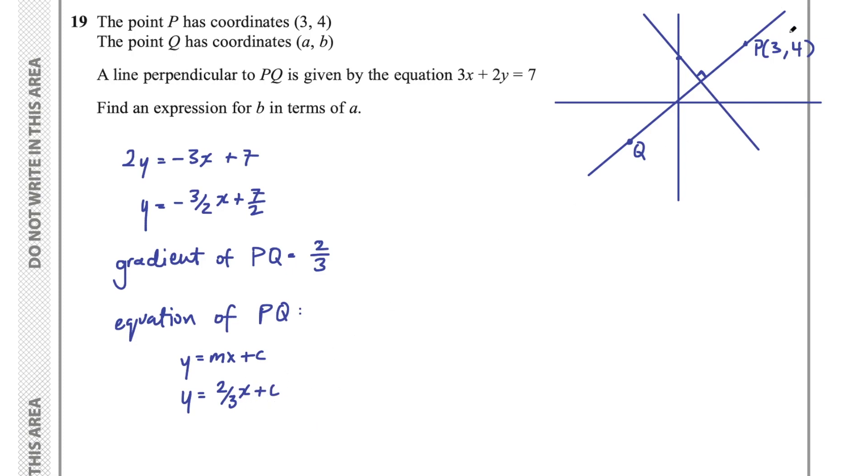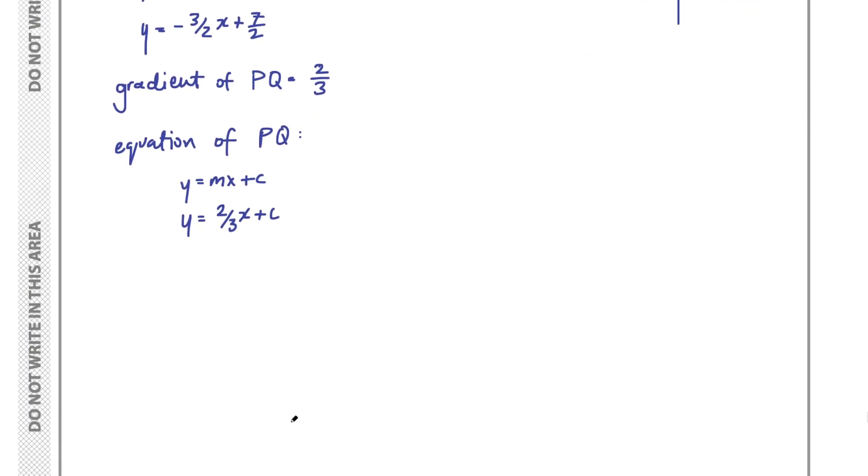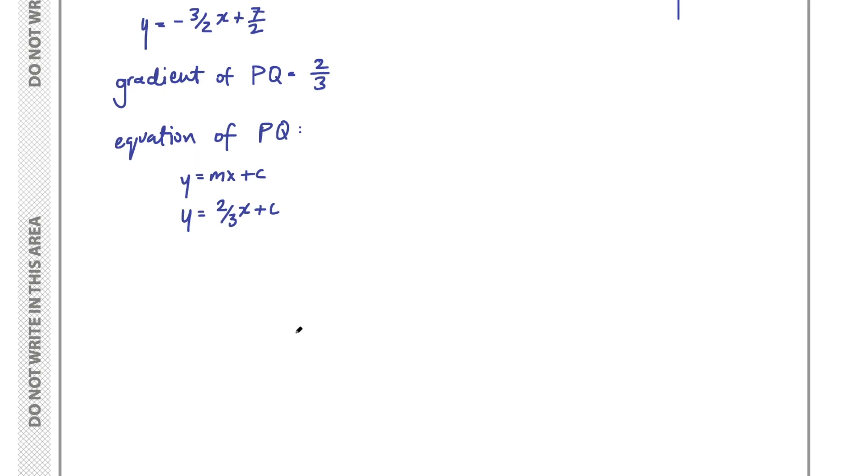What I usually suggest is plugging this point into this equation, but I'm going to do it slightly differently this time. I'm going to use the point-slope form of a straight line. So we can say using 3, 4, which is the point on that line.